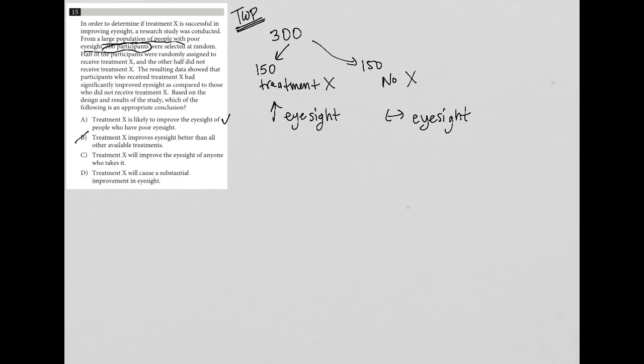Choice C. Treatment X will improve the eyesight of anyone who takes it. Well, that's also not true because what do we have in the question? It says the resulting data showed that participants who received treatment X had significantly improved eyesight as compared to those. It says significantly improved. I don't necessarily know what that means. I'm going to leave this here for right now.